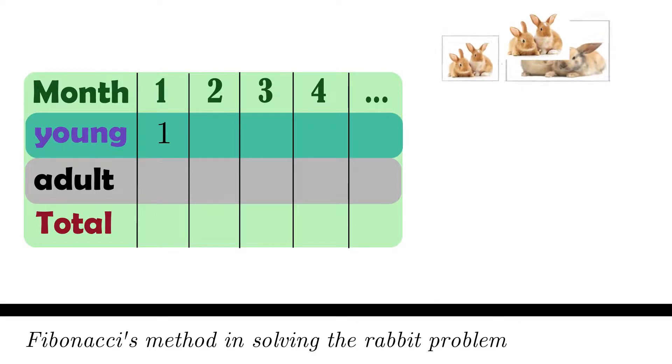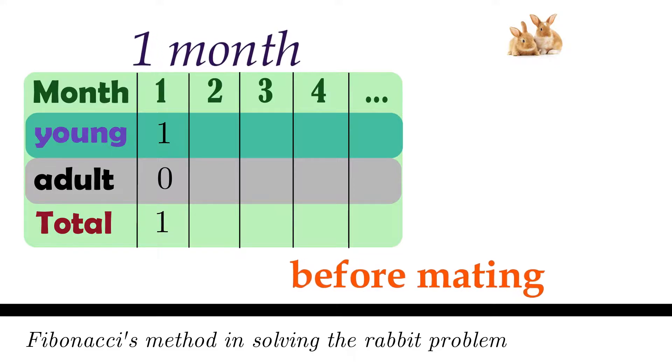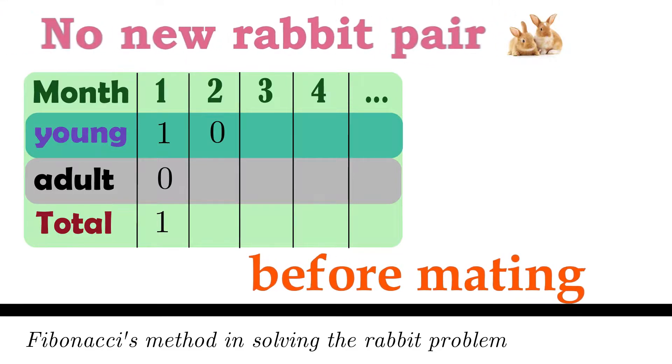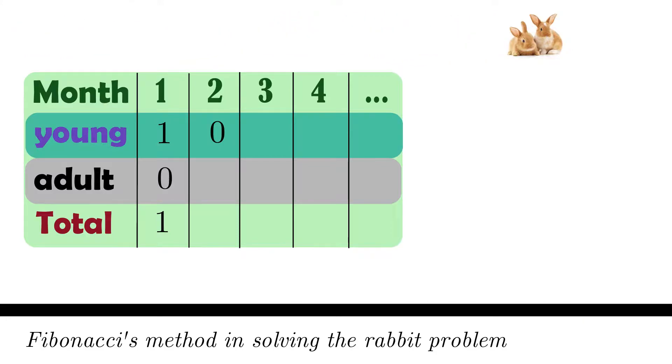To illustrate the solution, let us consider young rabbit pairs and adult rabbit pairs. At the start of the first month, one pair of young rabbits are introduced into the population. Since it takes one month for rabbits to get mature before mating, then at the start of the second month, no new pair of rabbits are introduced. However, this marks the reproduction of the next generation since the young pair in the first month are now the mature pair of rabbits.